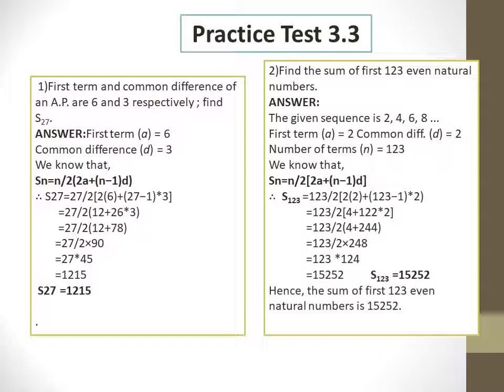The second sum: find the sum of the first 123 even natural numbers. The even natural numbers start from 2, and the common difference is 2, giving the sequence 2, 4, 6, 8, and so on. The last even natural number is not given. Therefore A equals 2, D equals 2, and N equals 123.